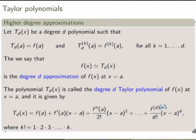The proof is very similar to what we just did for the quadratic case. In the denominators, this notation is what we call a factorial. k factorial means you take the product of all integers from 1 to k. For example, 3 factorial equals 1 times 2 times 3, which equals 6. This is the degree d Taylor polynomial, and the higher the degree, the better the approximation of f of x at x equals a.